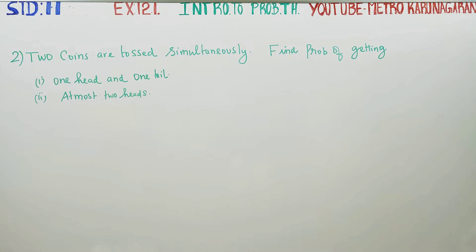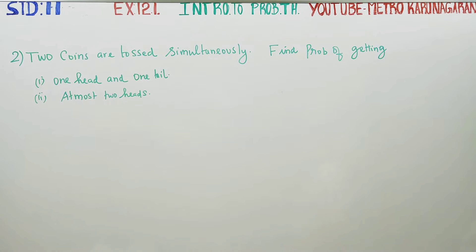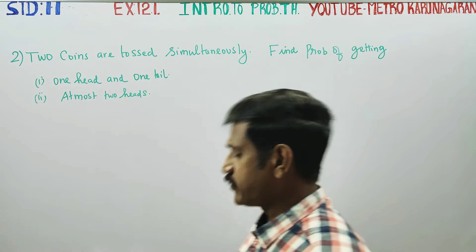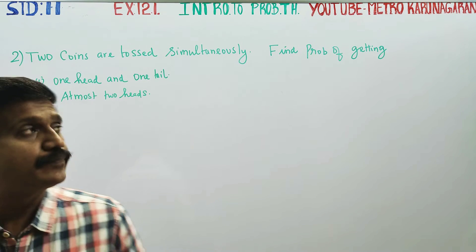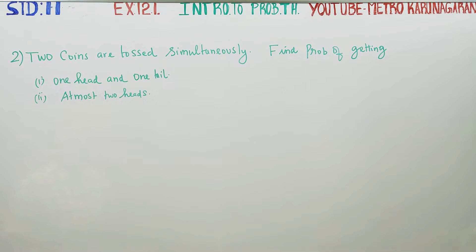Dear 11th standard students, in exercise number 12.1, introduction to probability theory, sum number 2 — two coins are tossed simultaneously.